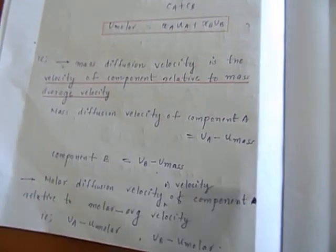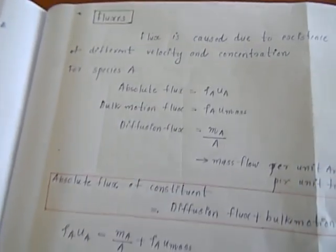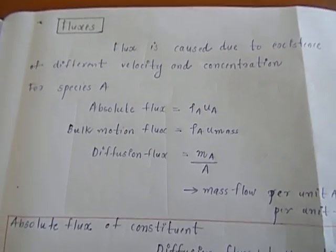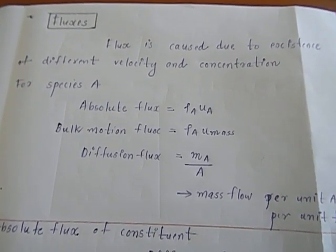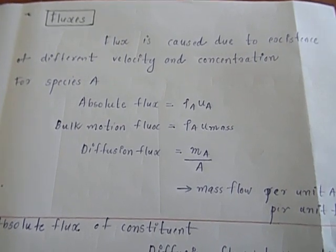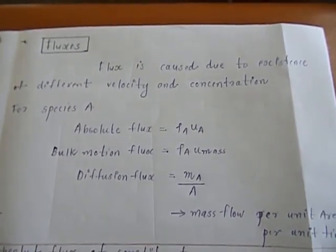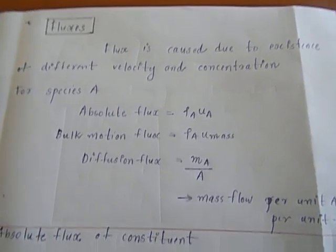This covers the terms related to velocities. Now we are going to fluxes. Flux is caused due to velocity and concentration. Wherever there is a concentration gradient and there is a velocity, we can explain the flux.